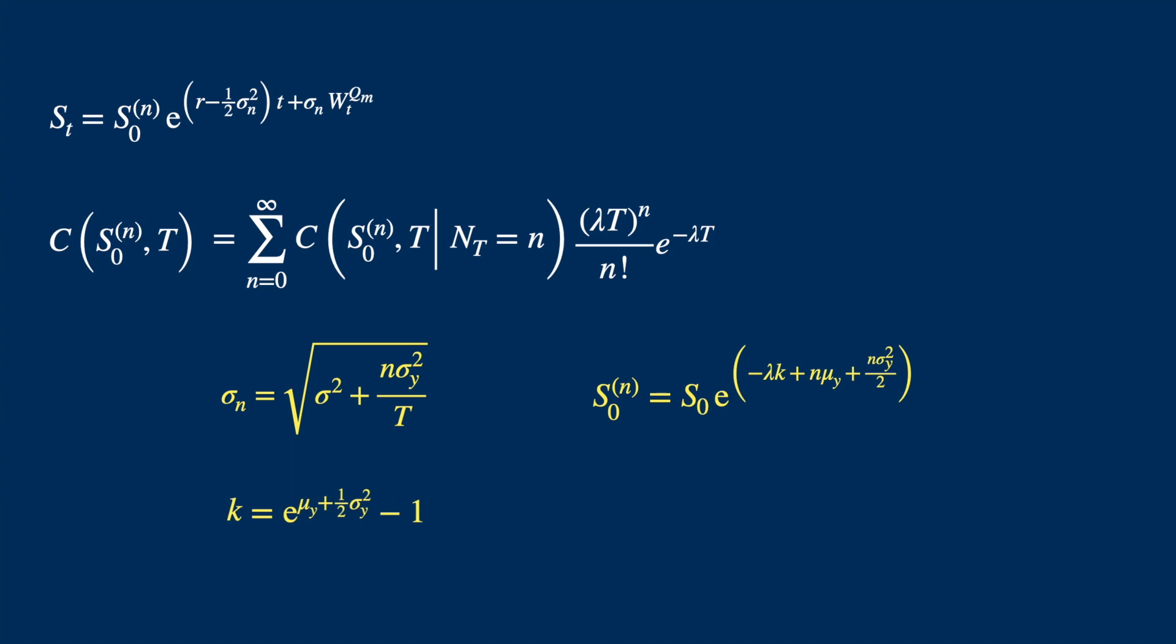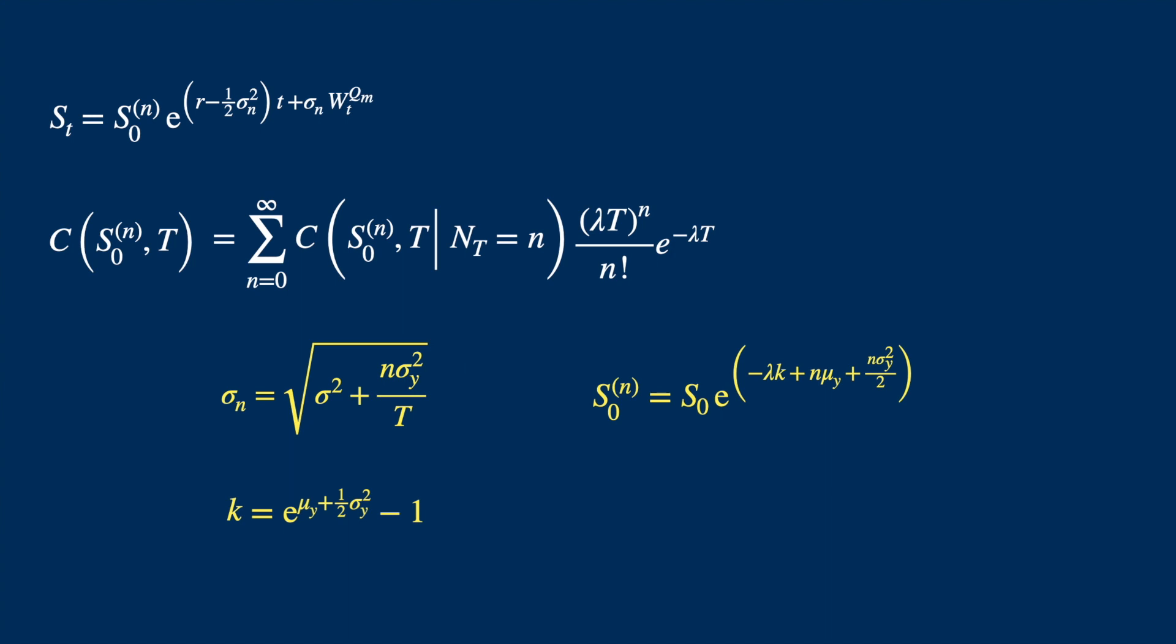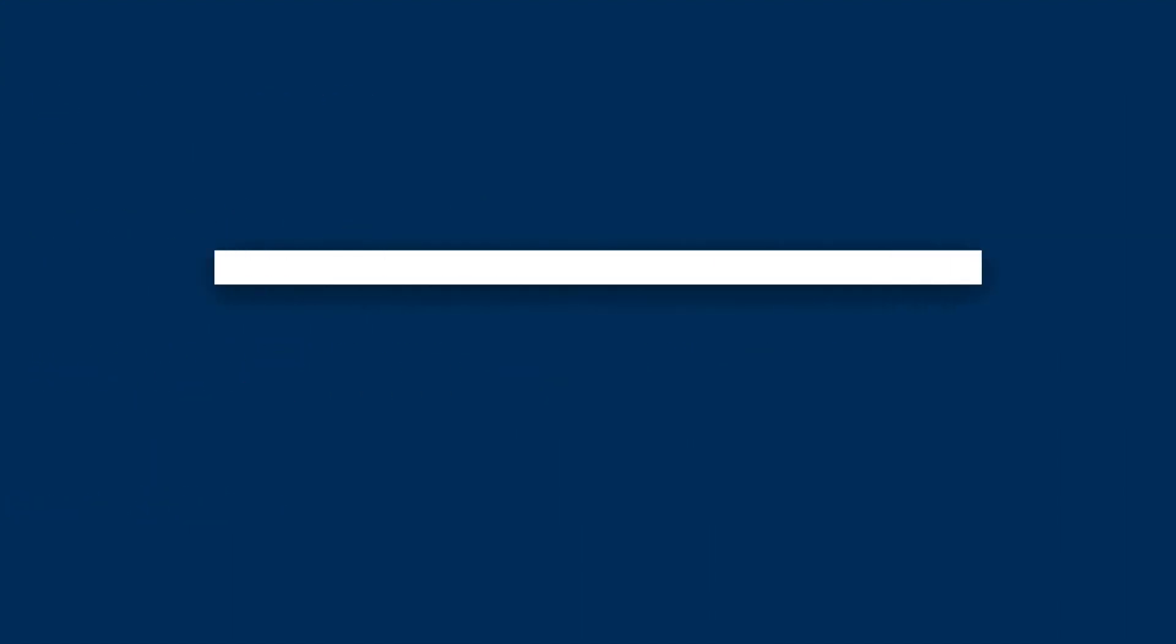One can also express this formula in an equivalent form in which the adjustments that we made to the initial stock price are reflected in the risk-free rates and the Poisson process intensity parameter instead, but we can cover this in a sequel. Please give a thumbs up if you would like to see similar videos and I look forward to seeing you in the next.